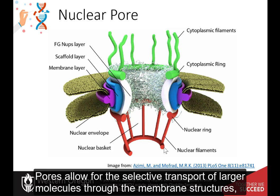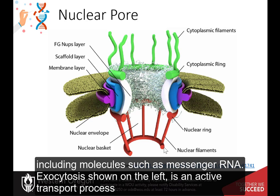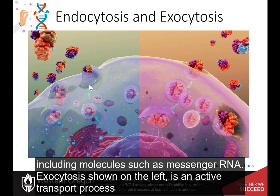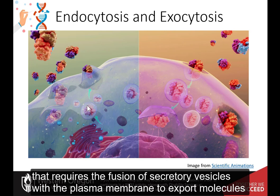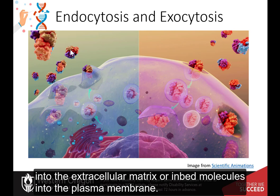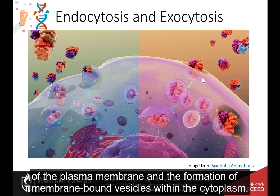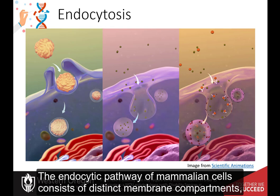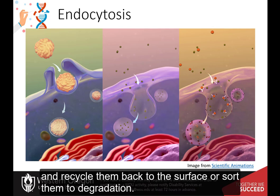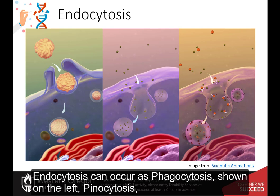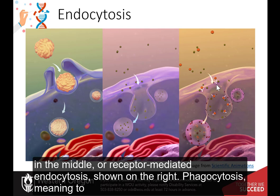Pores allow for the selective transport of larger molecules through the membrane structures, including molecules such as messenger RNA. Exocytosis, shown on the left, is an active transport process that requires the fusion of secretory vesicles with the plasma membrane to export molecules into the extracellular matrix or embed molecules into the plasma membrane. Endocytosis, shown on the right, is the opposite process of engulfing materials from the outside of the cell through the invagination of the plasma membrane and the formation of membrane-bound vesicles within the cytoplasm. The endocytic pathway of mammalian cells consists of distinct membrane compartments which internalize molecules from the plasma membrane and recycle them back to the surface or sort them to degradation. Endocytosis can occur as phagocytosis, shown on the left, pinocytosis, in the middle, or receptor-mediated endocytosis, shown on the right.